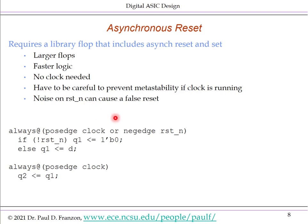From a coding perspective, the always block for asynchronous reset is triggered on posedge clock or negedge reset. If the negedge reset event occurs, reset will be low and q1 is set to zero. If reset is not low, the block behaves like a normal flop: q1 equals d. Non-reset flops are placed in a different procedural block.